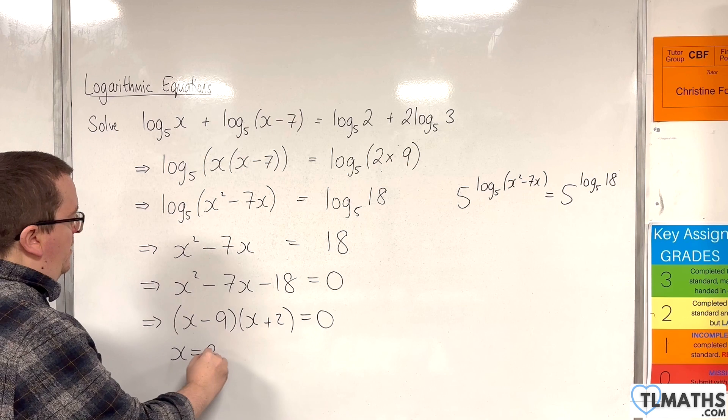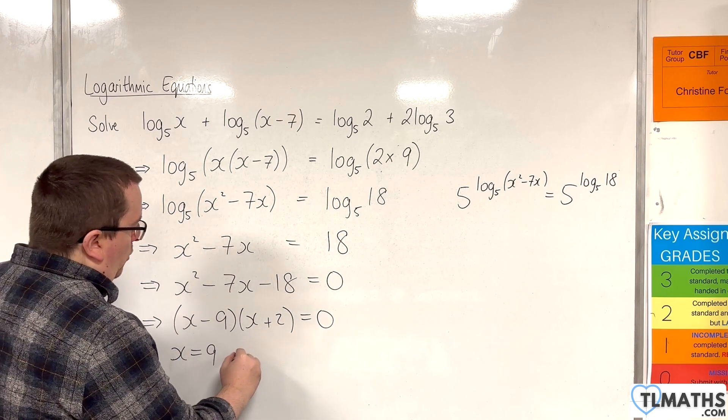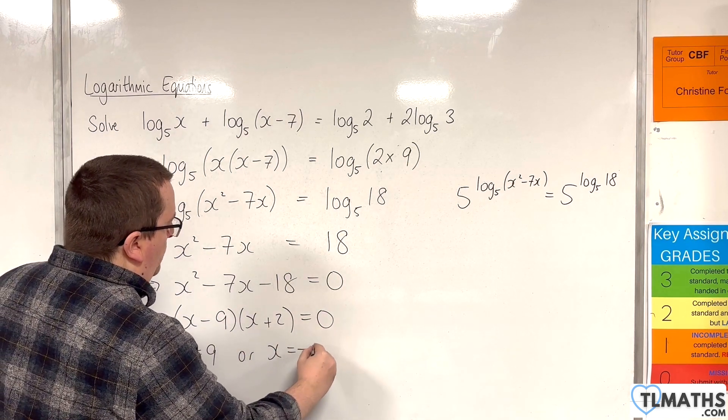So x equals 9, we'll solve that bracket equals 0, or x is equal to -2.